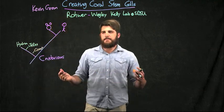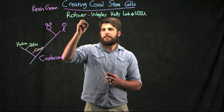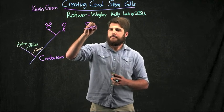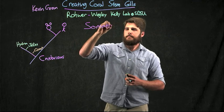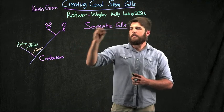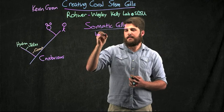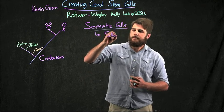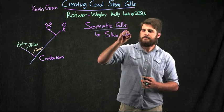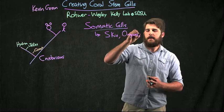So two major distinctions of cell types in these organisms are either somatic cells. These are any cell type that's fully differentiated, such as your skin, your organs, and your muscles.